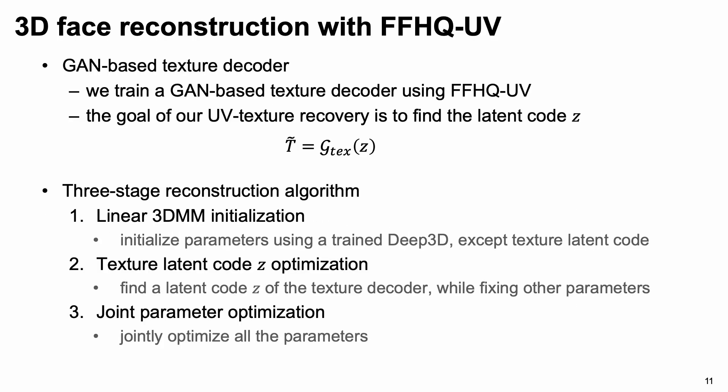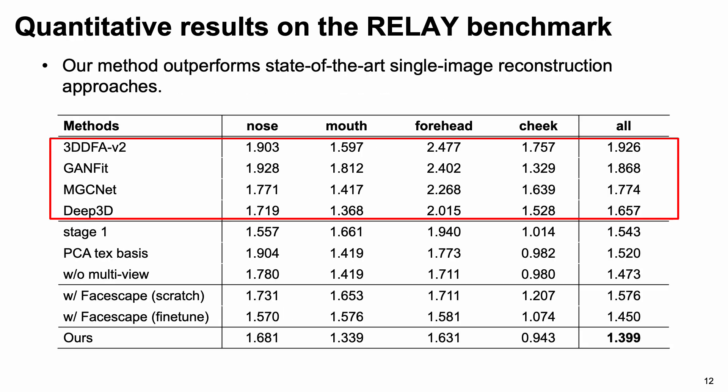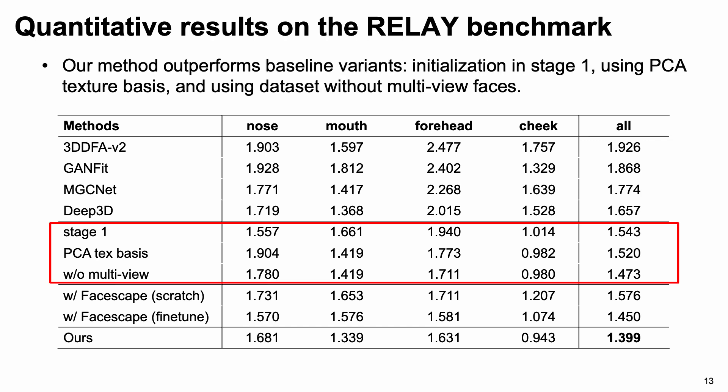Based on the proposed FFHQUV dataset, we train a GAN-based texture decoder and take it as a non-linear texture basis. In addition, we develop a three-stage algorithm for better 3D face reconstruction. This table shows the quantitative results on the Relay Benchmark, where our method based on FFHQUV dataset outperforms state-of-the-art single-image reconstruction approaches. The table also shows that our method outperforms baseline variants, including linear 3DMM initializer and stage 1 parameter optimization with PCA texture basis, and the texture decoder trained using UV map dataset created without generating multi-view images. The results demonstrate that our texture decoder effectively improves the reconstruction accuracy.